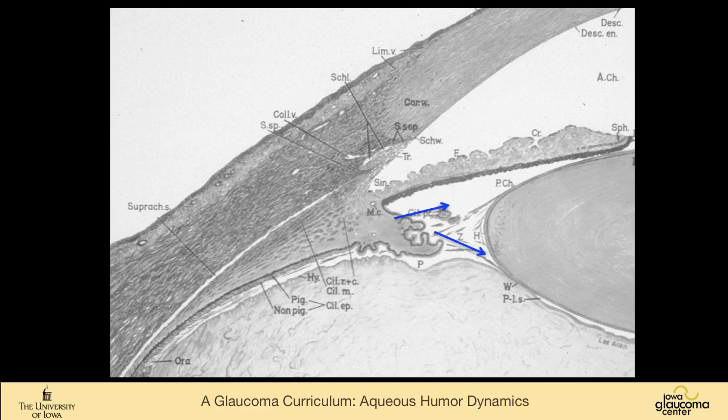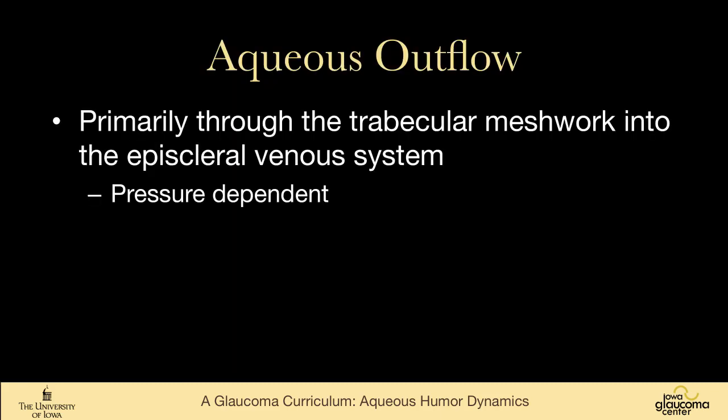The fluid flows from the ciliary body, bathes all the structures in the posterior chamber, then goes through the pupil into the anterior chamber, bathes the cornea, and ultimately reaches the iridocorneal angle. There it exits by two routes — primarily through the trabecular meshwork into the episcleral venous system, and this route is pressure dependent.